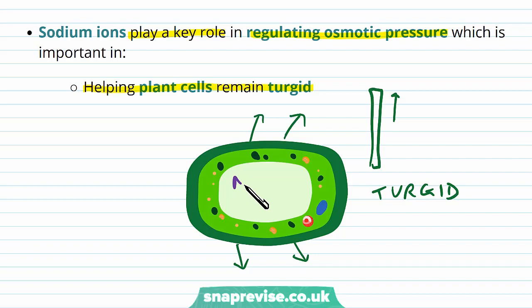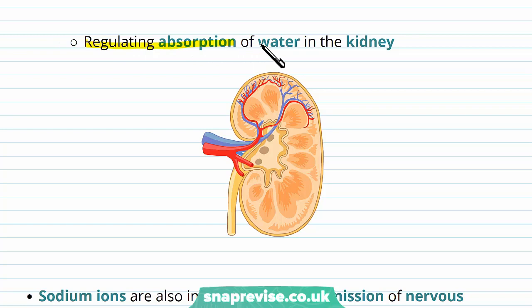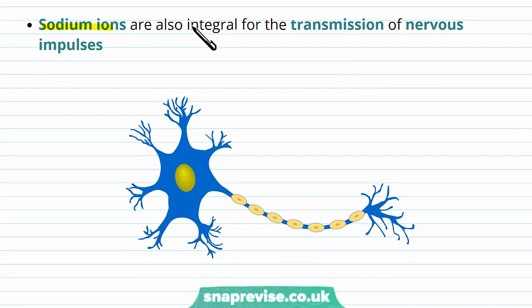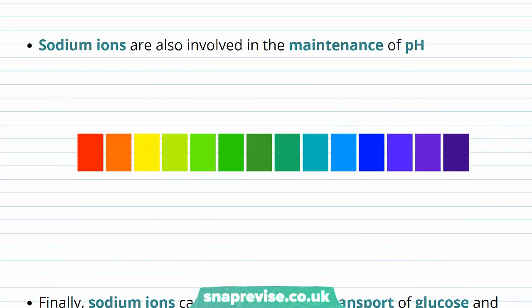Sodium is also important in regulating the absorption of water in the kidney. When the kidney filters out sodium, taking back that sodium can help water follow it, allowing us to reclaim water we might otherwise lose. One of sodium's most important roles is in the transmission of nervous impulses. The neuron sends electrical impulses from one end to the other, and the sodium ion is really important in allowing these impulses to move along. Sodium ions also help in maintaining the pH of the body, which has to be maintained at around seven because of crucial enzymatic reactions.